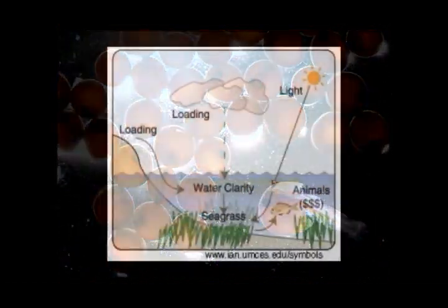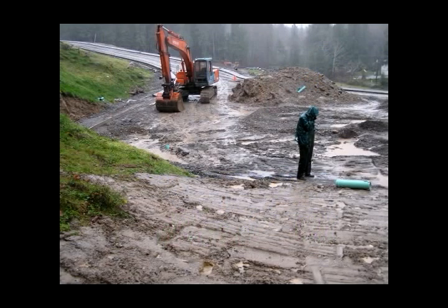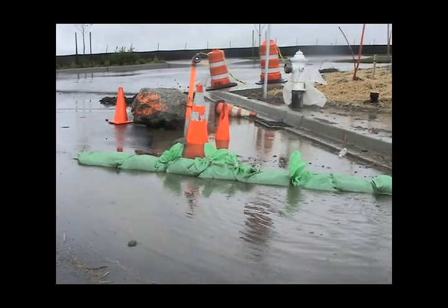Reduced water clarity can also increase water temperature, lower oxygen in the water, and block light to aquatic plants. Soil erosion is the most common source of turbidity from construction sites.